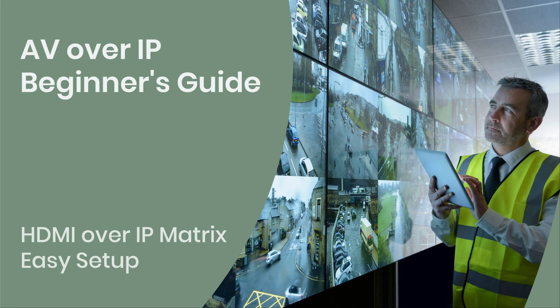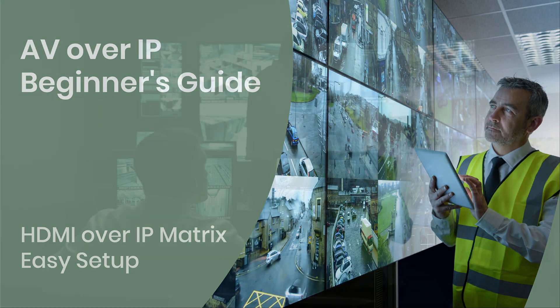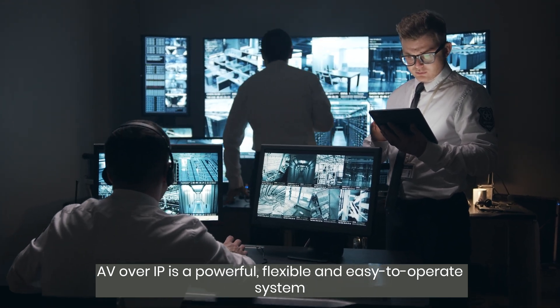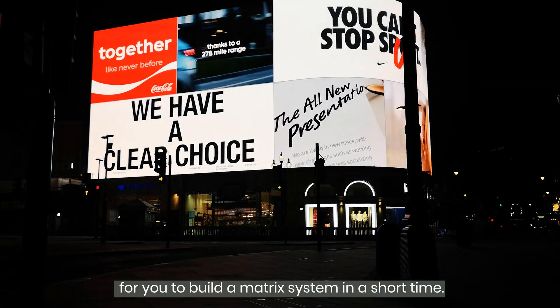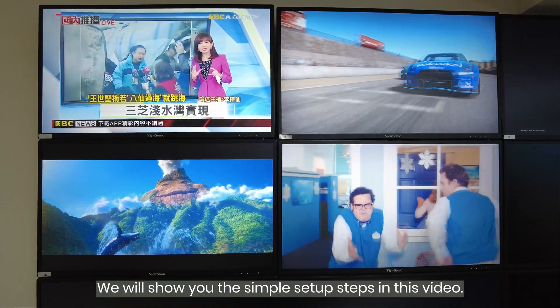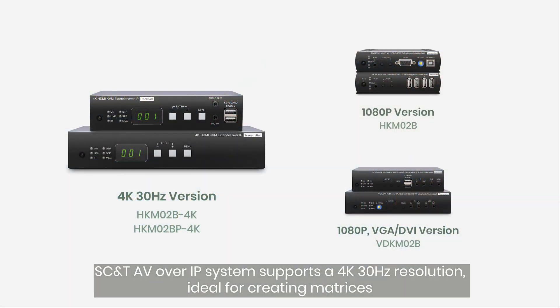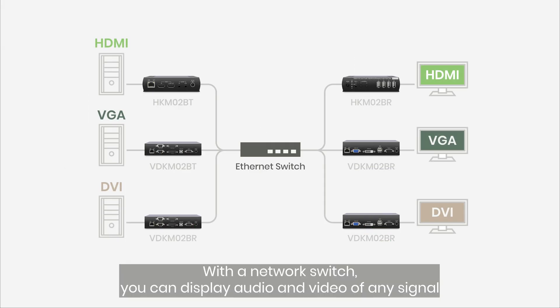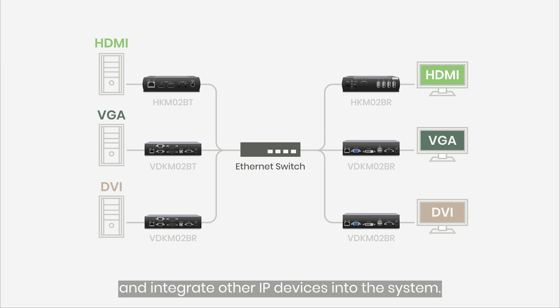Welcome to SCNT AV over IP Beginner's Guide. AV over IP is a powerful, flexible, and easy-to-operate system for you to build a matrix system in a short time. We will show you the simple setup steps in this video. SCNT AV over IP system supports 4K 30Hz resolution, ideal for creating matrices or video walls in data transmission centers, command centers, and more. With a network switch, you can display audio and video of any signal and integrate other IP devices into the system.